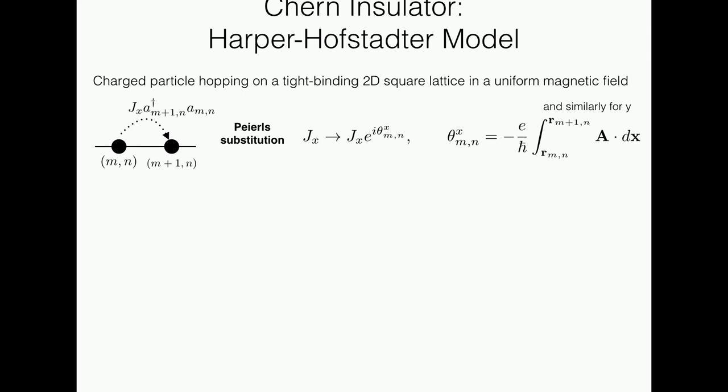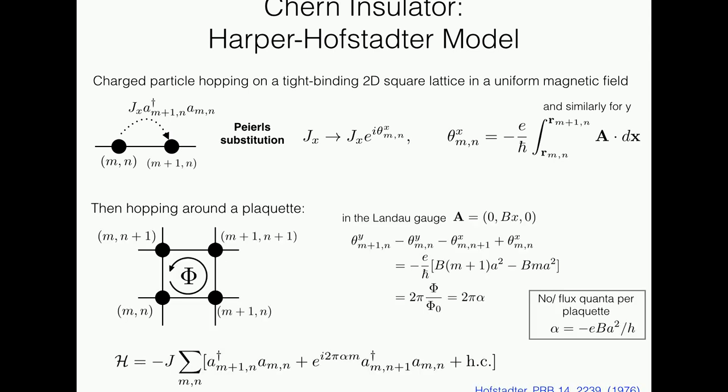To talk about the Harper-Hofstadter model, I should first talk about how we include the effects of a magnetic field for particles on a tight-binding lattice. We use the Peierls substitution: normally we have a tight-binding hopping process that takes us from one lattice site to another, with the annihilation of the particle on one site and creation on the next with hopping amplitude Jx. In the presence of a magnetic field, this hopping amplitude becomes complex — it gains a complex phase called the Peierls phase, which depends on the line integral of the magnetic vector potential experienced as the particle hops from one site to the next. This is like the Aharonov-Bohm phase you get when you hop around a plaquette.